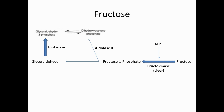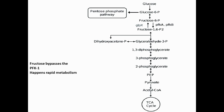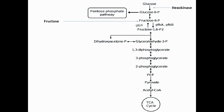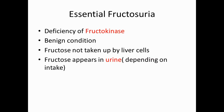Glyceraldehyde is then converted into glyceraldehyde-3-phosphate with the help of triose kinase, and that is how fructose enters the glycolysis pathway. Because fructose directly enters as dihydroxyacetone phosphate, it bypasses the rate-limiting step of glycolysis, which is phosphofructokinase-1. This means fructose is metabolized faster than glucose. Note that hexokinase, the initial enzyme for glycolysis, also metabolizes a small amount of fructose.